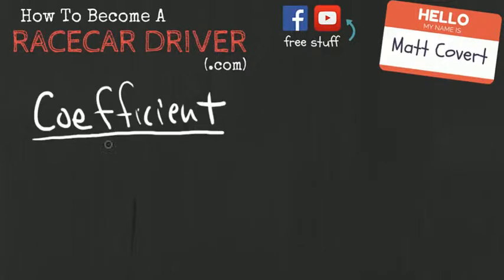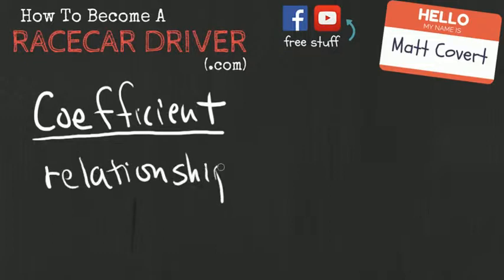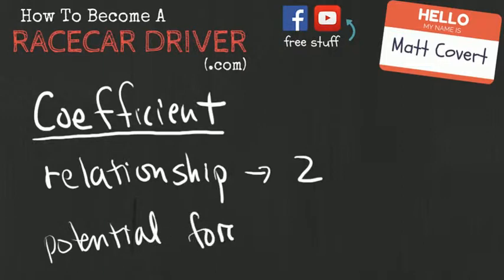Coefficient, let me just make this a little easier for you. Coefficient is just a fancy term for a relationship between two things. And in this case we're going to be talking about the relationship between potential force, potential cornering force, and we're going to be talking about vertical load.